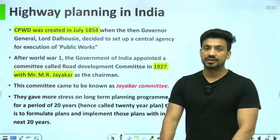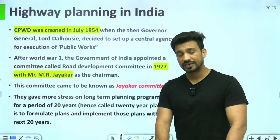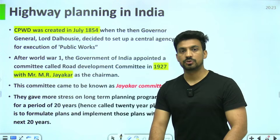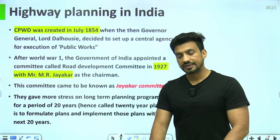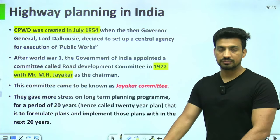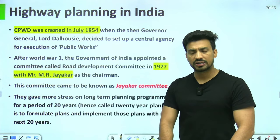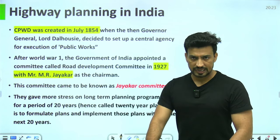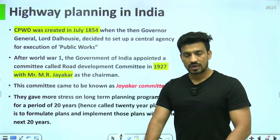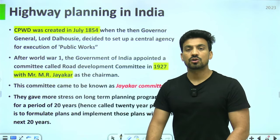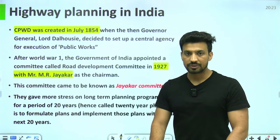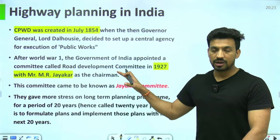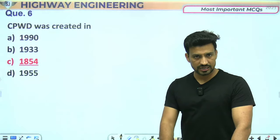Public Works execute करने के लिए Lord Dalhousie ने July 1854 में CPWD create किया। World War 1 के बाद 1927 में India में Road Development Committee बनाई गई, जिसका नाम रखा गया Jekar Committee — MR Jekar के नाम पर।